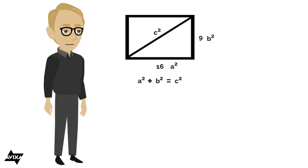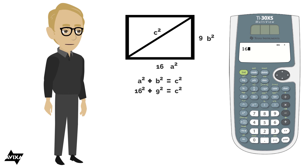Let's fill this in: 16 squared plus 9 squared equals c squared. 16 squared is 256, and 9 squared is 81, so 256 plus 81 equals 337. Therefore, c squared equals 337.